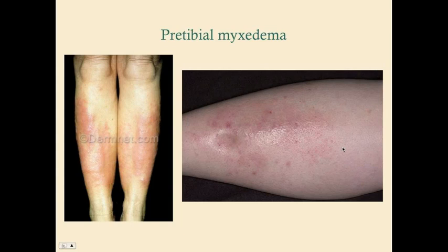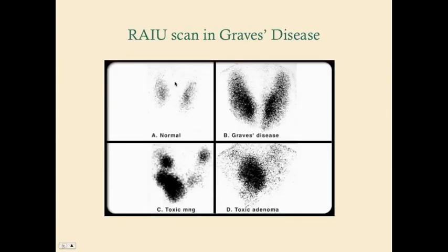An RAIU scan involves injecting the patient with radioactive iodine — this is a diagnostic test, not an ablation. The thyroid takes up the iodine if healthy. In Graves' disease, there is confluent increased radioactive iodine uptake throughout the gland. This contrasts with a multinodular goiter or adenoma, which shows hot spots — one or multiple focal areas of increased uptake.